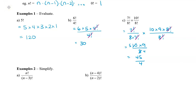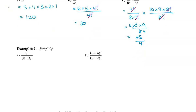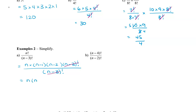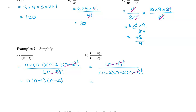Now let's extend this to factorials with variables. The larger factorial is n factorial, so rewrite it as n times (n minus one) times (n minus two) times (n minus three) factorial, which matches the denominator. The (n minus three) factorials cancel, leaving n times (n minus one) times (n minus two). For the next one, n minus two factorial is the bigger factorial. Expand to get (n minus two) times (n minus three) times (n minus four) factorial — the (n minus four) factorials cancel, leaving one over (n minus two) times (n minus three).